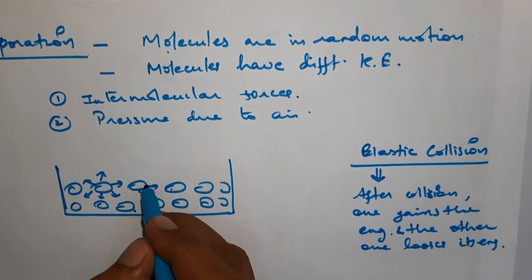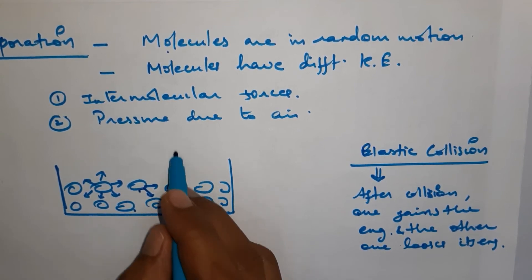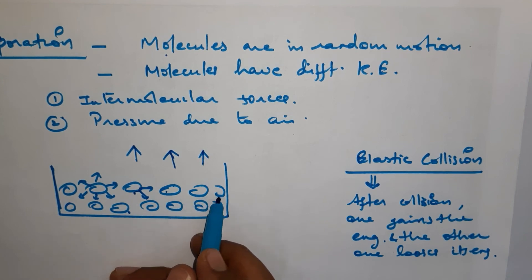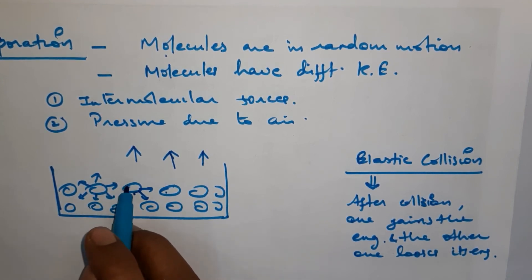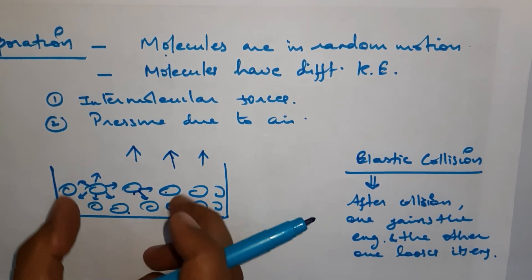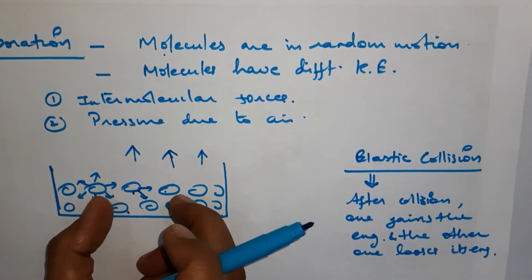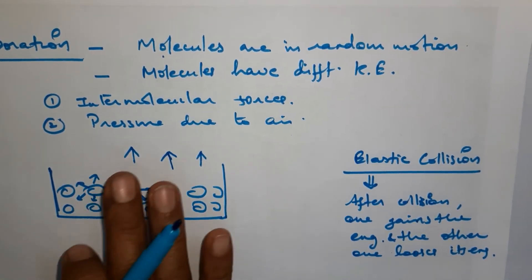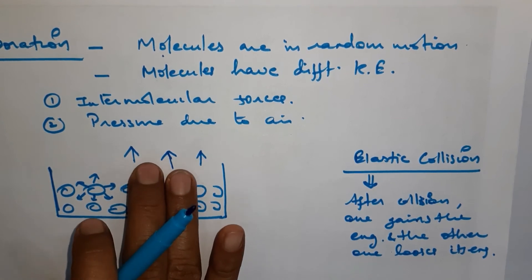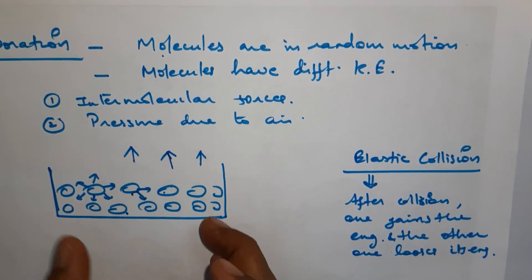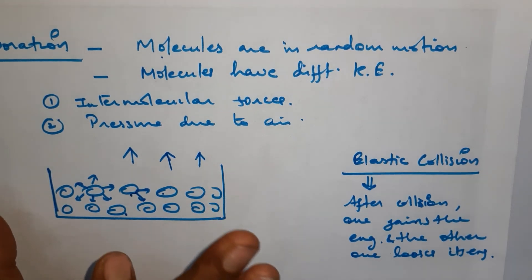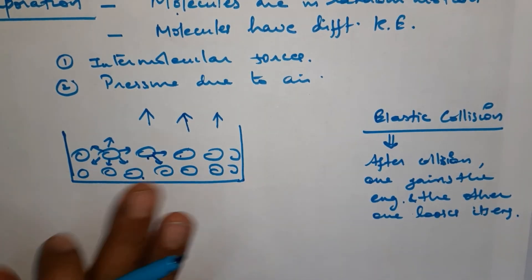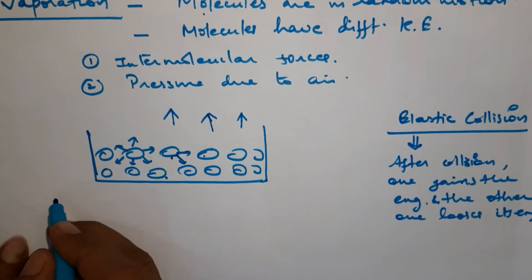After these energetic particles escape into the atmosphere as vapor, the molecules left behind have lost their energy during the collision period. This is why a cooling effect is applied — the remaining liquid becomes cooler because it has already lost its energy to the particles that escaped into the atmosphere. This process is known as evaporation, and this is also how cooling occurs.